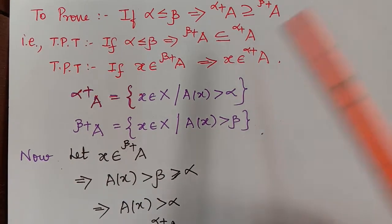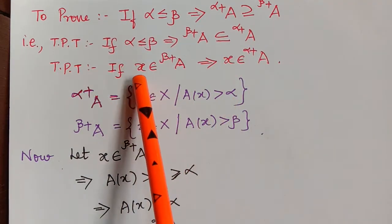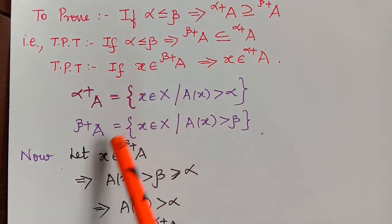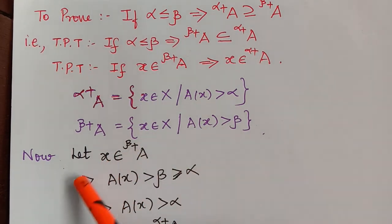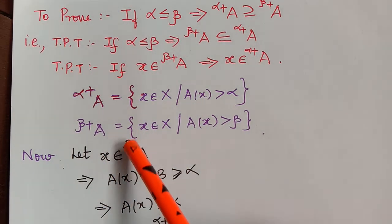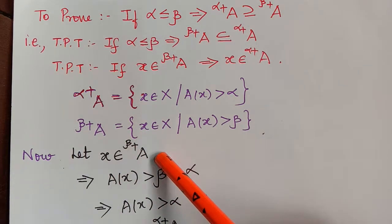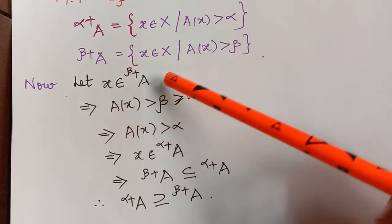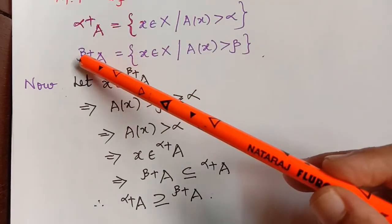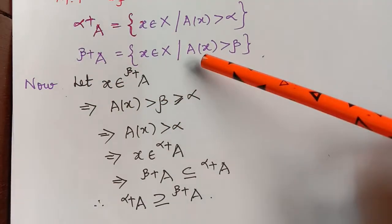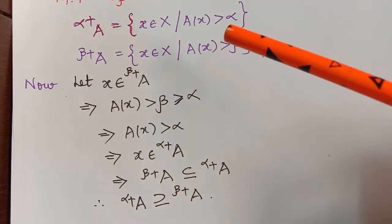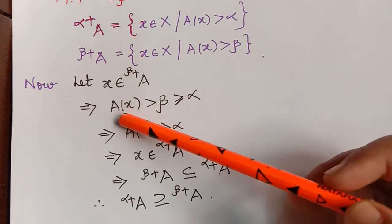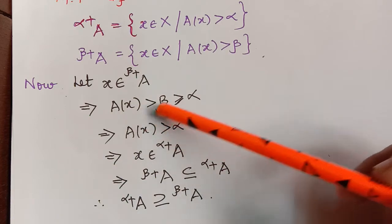To prove this, we shall first take an element X in strong beta cut of A. So let X be an element of strong beta cut of A. If X is an element of the strong beta cut of A, then by the definition of strong beta cut of A, we know that the membership grade of X with respect to A will be strictly greater than beta. So we write A of X strictly greater than beta.